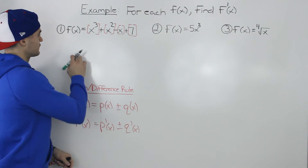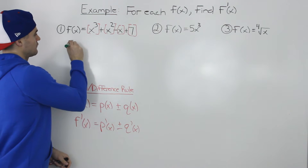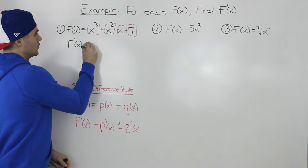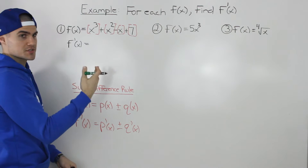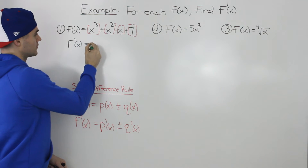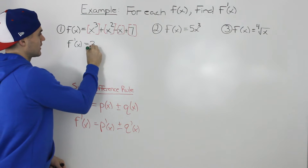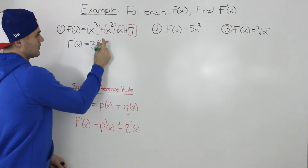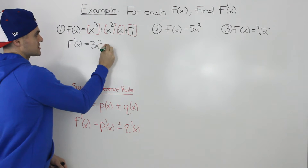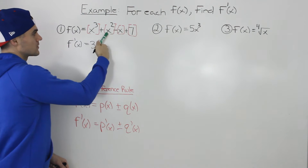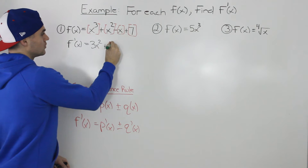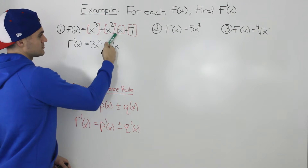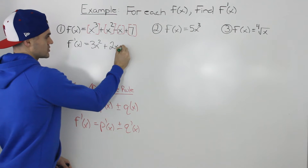So let's get into finding the derivative of this function. f prime of x — starting with x cubed: using the power rule, bring the 3 down and subtract 1 from the exponent, we get 3x squared. Then we put an addition symbol, and the derivative of x squared — same thing with the power rule — would be 2x.